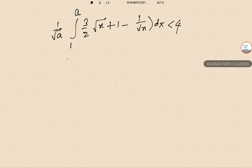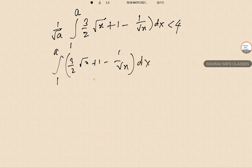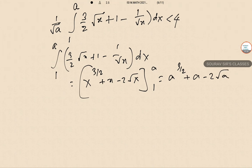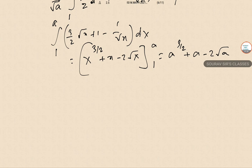Let's calculate the integral first: integral of (3/2)√x + 1 - 1/√x dx from 1 to A. This evaluates to x^(3/2) + x - 2√x, evaluated from 1 to A, giving A^(3/2) + A - 2√A (minus the value at 1).